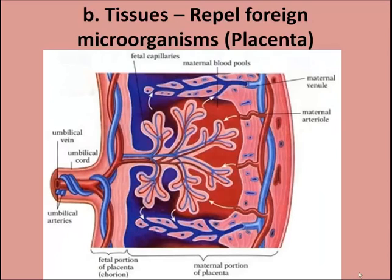There are many different types of tissue that repel foreign microorganisms. A good example is the placenta. On the uterine wall, between the mother and the fetus, the arteries and veins do not actually embed and maintain direct contact with one another. There is a space in between, and that space can help protect the baby from receiving certain things like viruses and colds from the mother while she is pregnant.